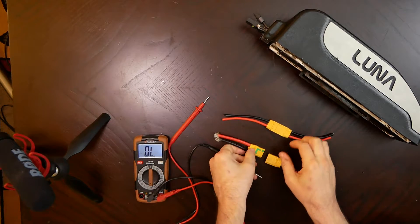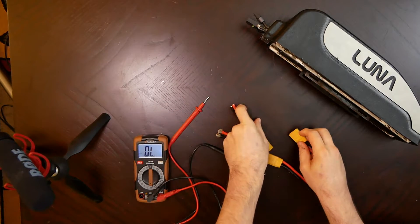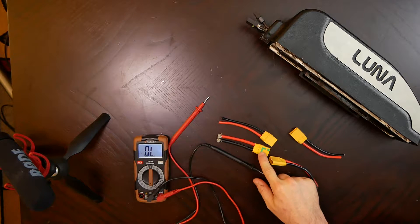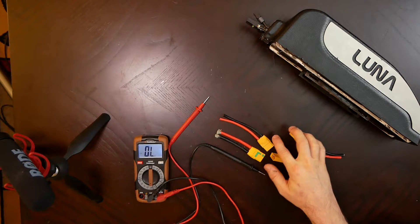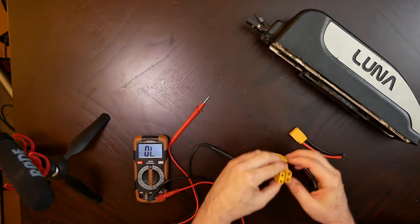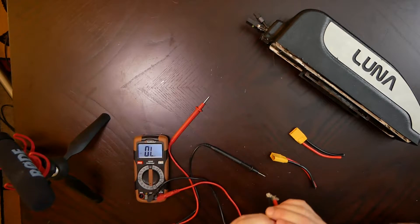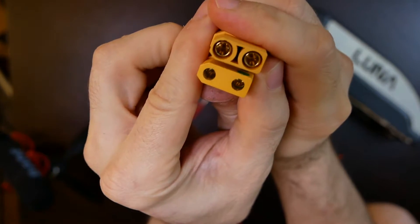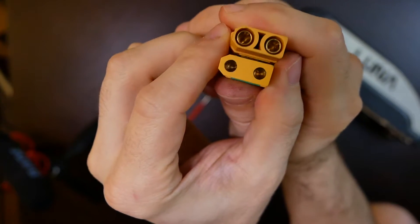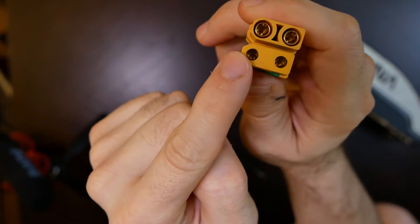Now the S signifies anti-spark. As you can see, there's a green piece here and there isn't here. If you actually look inside, there is a green resistor right within there.